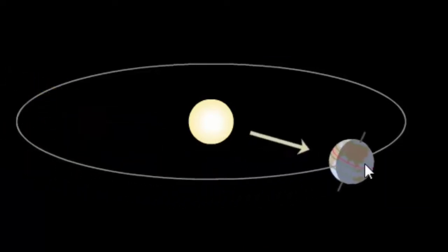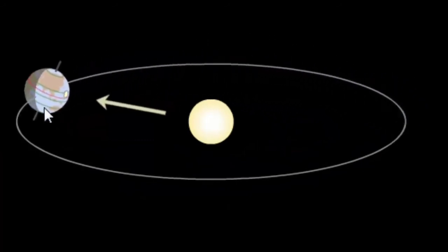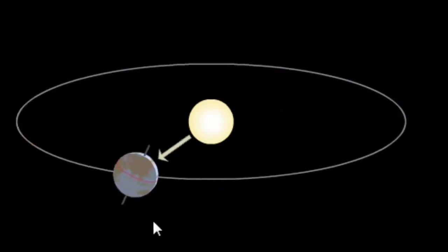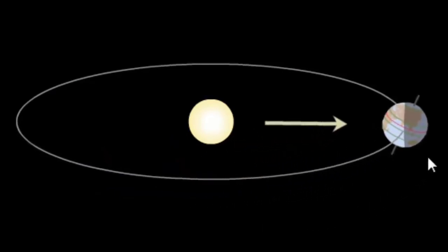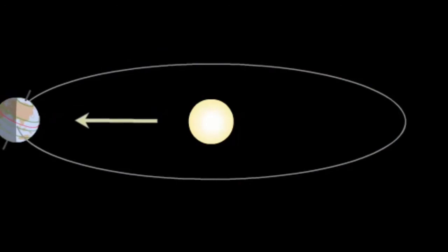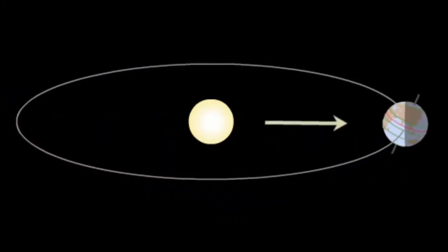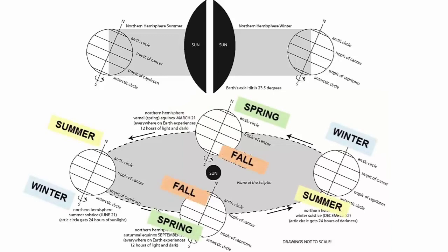As we continue to watch this process, we can see that the Southern Hemisphere moves through this one-year orbit from its winter through its spring, summer, fall, and back to winter, while the Northern Hemisphere experiences the opposite season. Note that each solstice and equinox represents opposite seasons in opposite hemispheres. The winter solstice in the Northern Hemisphere is the summer solstice in the Southern.